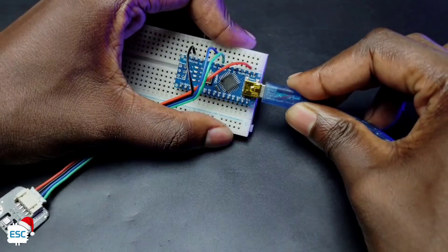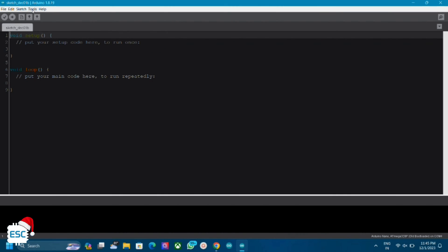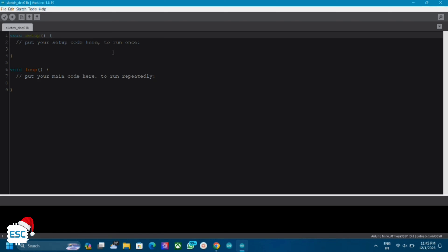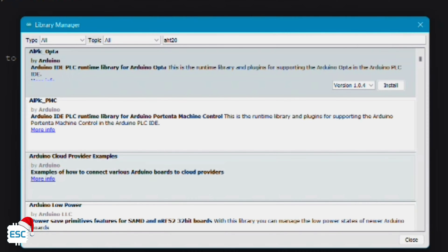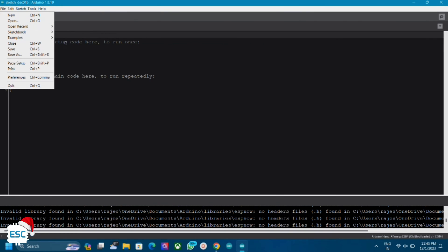Now connect the Arduino to computer and go to Arduino IDE and install AHT20 library. For that, go to sketch, include library, then manage library and search and install AHT20 library. Now go to examples and open the AHT read test example.